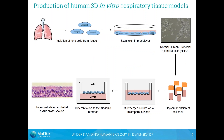As a general scheme for how these tissues are produced: we take cells isolated from lung tissue, expand them in monolayer, and then cryopreserve them as a large bank of cells. We then seed these cells onto a microporous insert membrane submerged in culture media, and then airlift them so that they're only fed with media from the basal side and exposed to air on the apical surface. This facilitates their differentiation into a nice pseudo-stratified epithelial tissue.